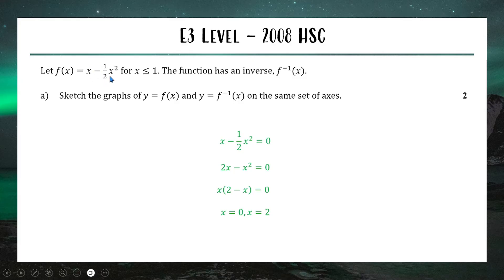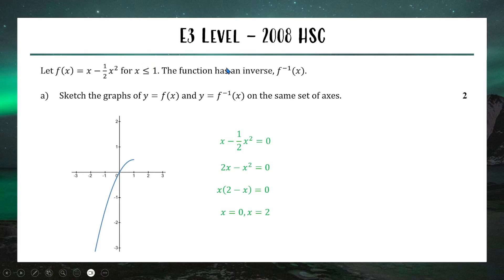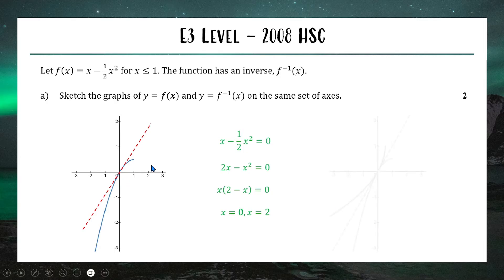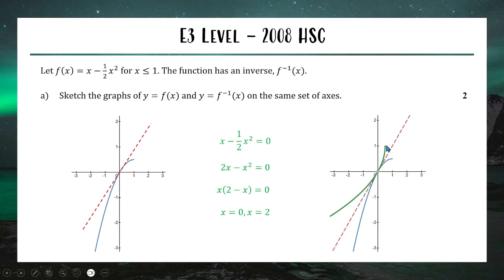Make sure you read the question carefully — the restricted domain means we only sketch the left half of the parabola, not the whole thing. Once we have the blue curve sketched, we put in the line y = x in red and reflect the blue line across it to get the green inverse curve. The point at x = 1 on the original function becomes y = 1 on the inverse. That gives us both curves for two marks.